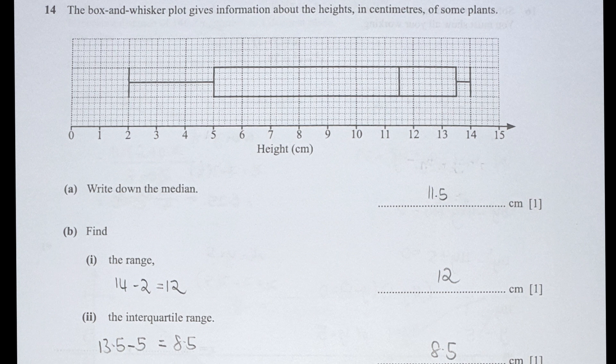Question 14 is a box and whisker, a newly added topic. For the median, look for the line at the center—in our case, 11.5. For the range, look at the last line on the left and right hand: 14 minus 2 equals 12. The interquartile range is the start and end of the box: 13.5 minus 5 equals 8.5 centimeters.